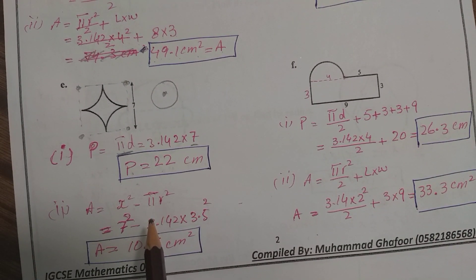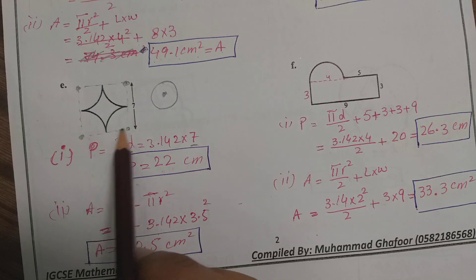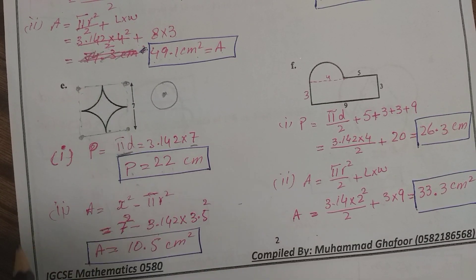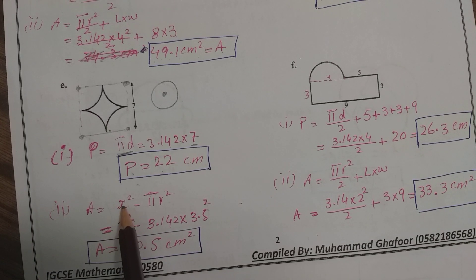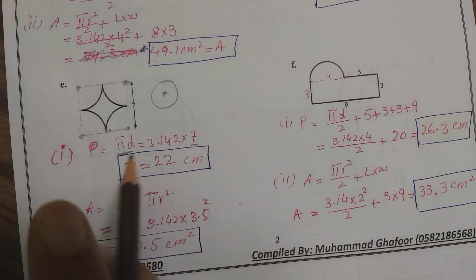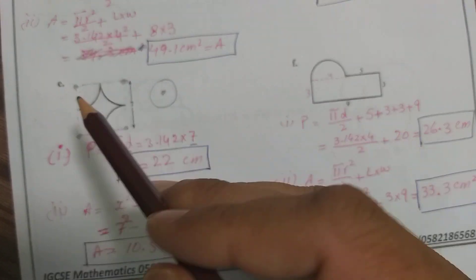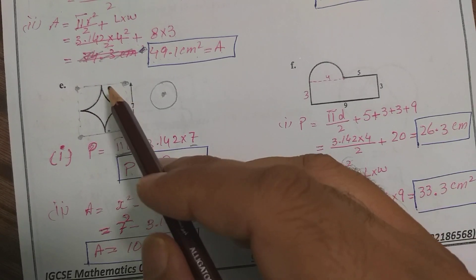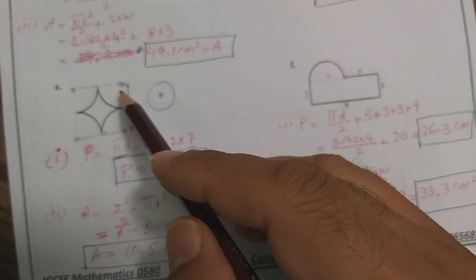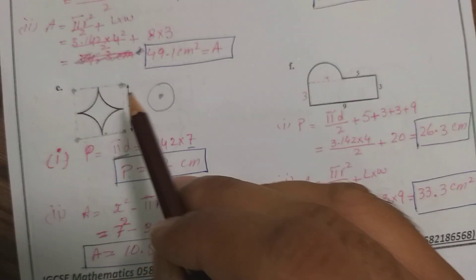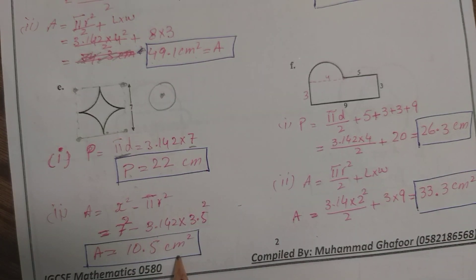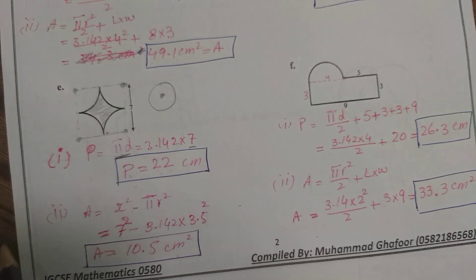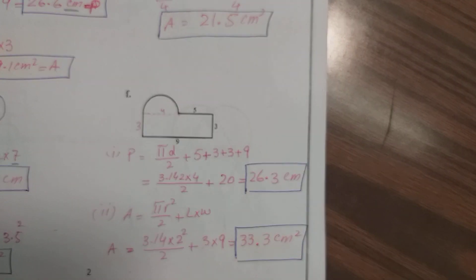For the area of part e, the complete shape forms a square with all sides equal to 7. So we calculate area of square minus area of the complete circle, since flipping all four quarter circles forms one full circle. Area of square is 7 squared and area of circle is pi r squared. Simplifying gives the answer 10.5 centimeters squared.